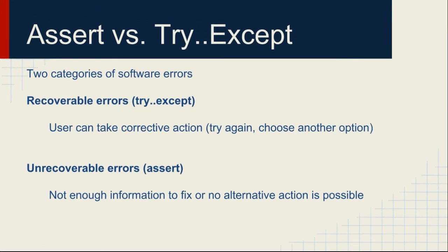The assert statement raises an exception, so we need to talk a little bit about how assert exceptions fit into the overall exception handling scheme that Python has. We have two ways of dealing with exceptions: try blocks and asserts. Try blocks are typically used when you have some kind of recoverable error — you try something, it fails, and then you can try again or do something else. Assert statements are different: you're not really meant to catch the exception and do something with it.